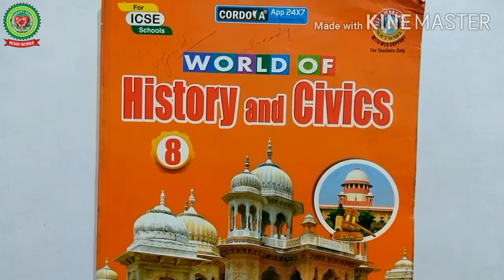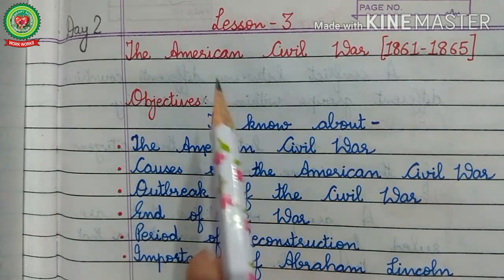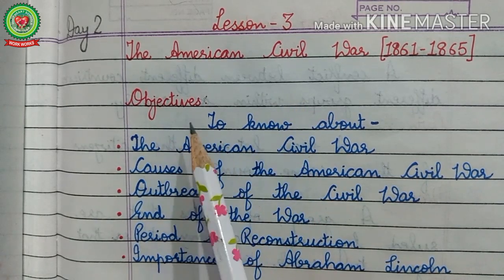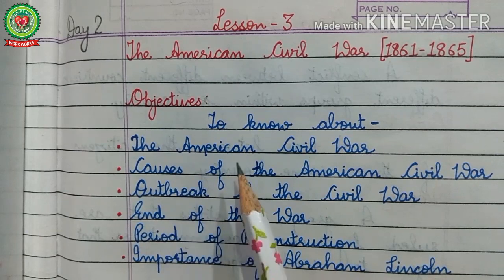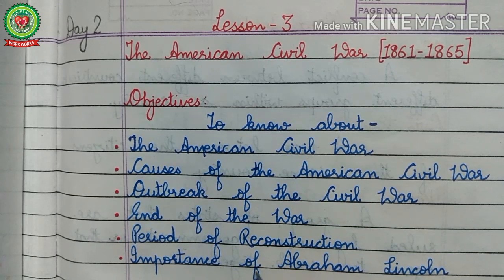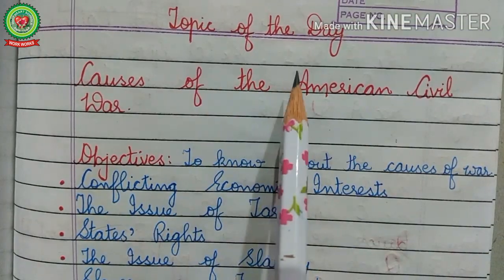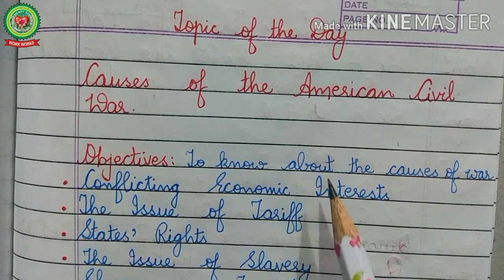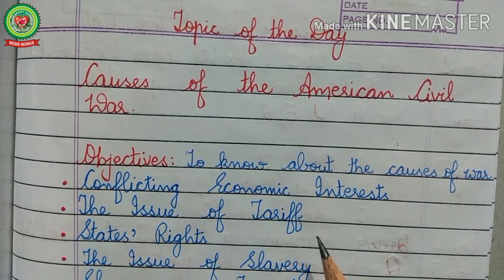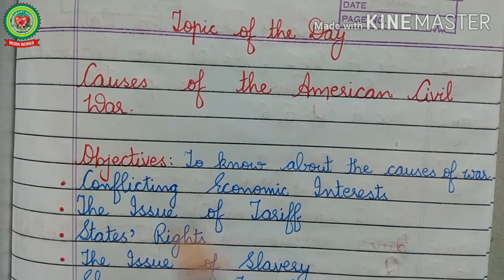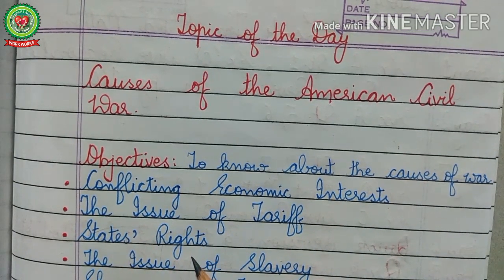Hello everyone, welcome to history class. In our previous video we had started Lesson 3, the American Civil War, and today we are going to continue the same lesson. The main objectives of this lesson are to know about the American Civil War, causes of the American Civil War, outbreak of the Civil War, end of the war, period of Reconstruction, and importance of Abraham Lincoln. The topic of today's causes of the American Civil War — the main objectives are to know about the causes of war. Earlier we had discussed the first three causes: conflicting economic interest, the issue of tariffs, and the state's rights.